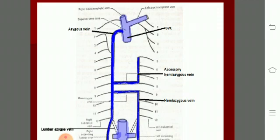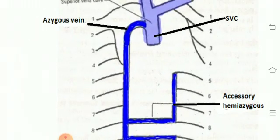The second, third, and fourth posterior intercostal veins join together to form the right and left superior intercostal veins. On the right side, the right superior intercostal vein drains into the azygos vein.